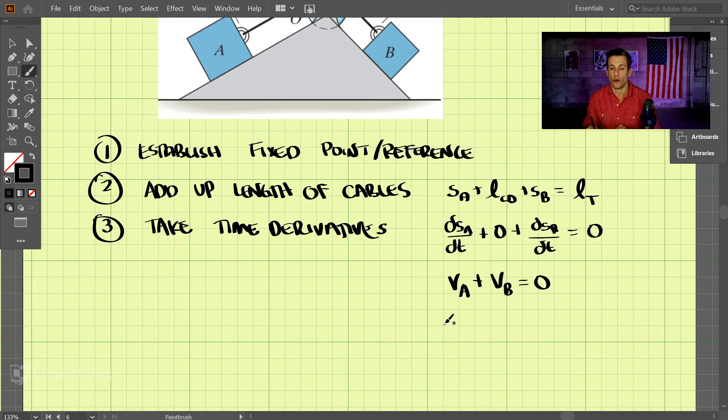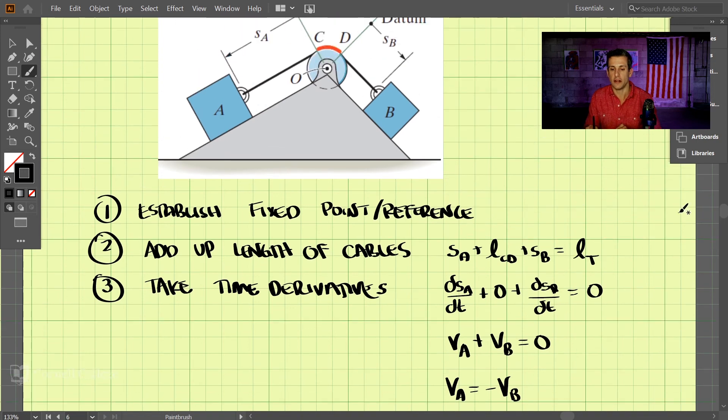So what does this come out to be? VA equals negative the velocity of B. So what happens here?